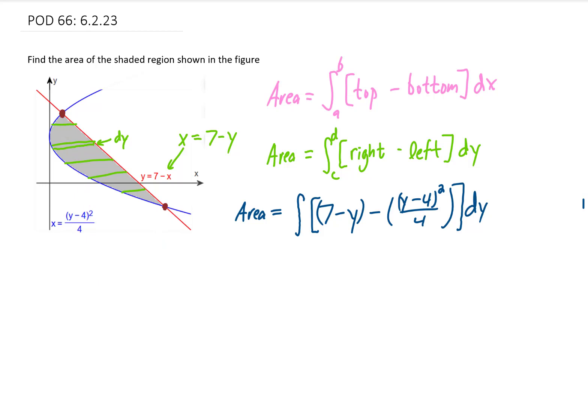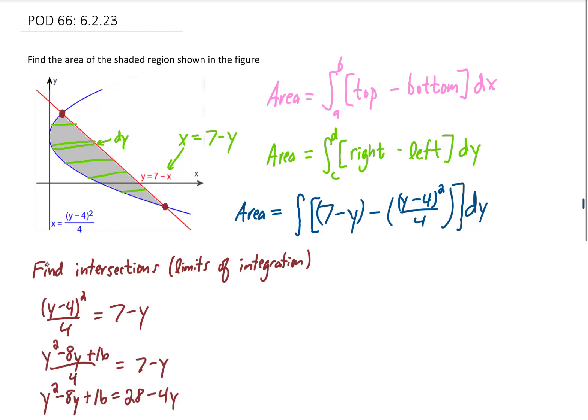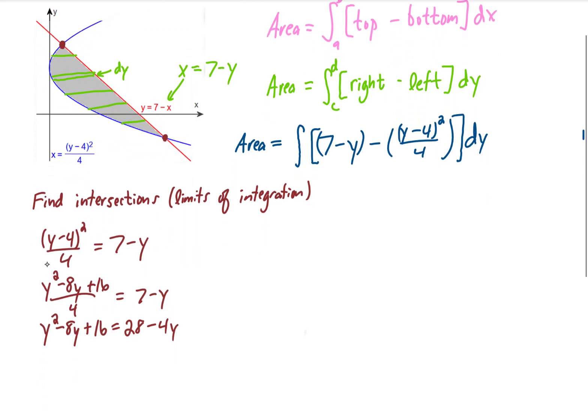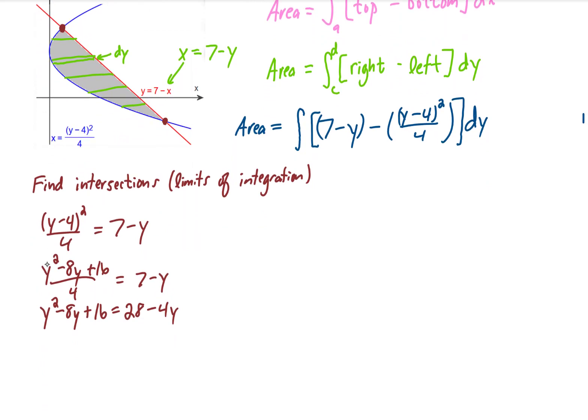There are multiple ways to do this, but ultimately we need to set these two functions equal to each other. This gives us a fairly ugly looking equation to solve for y. I am going to FOIL this numerator, then multiply both sides of the equation by 4. Then recognizing that this is a quadratic equation, I am going to move everything to one side and factor to solve for y. That gives us that the limits of integration on this integral go from y equals negative 2 to y equals 6.